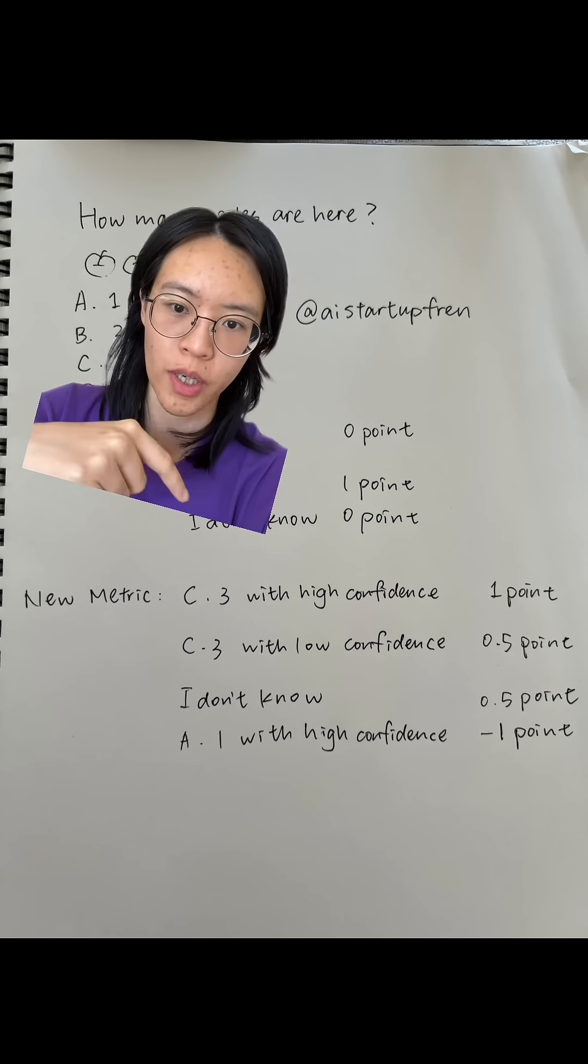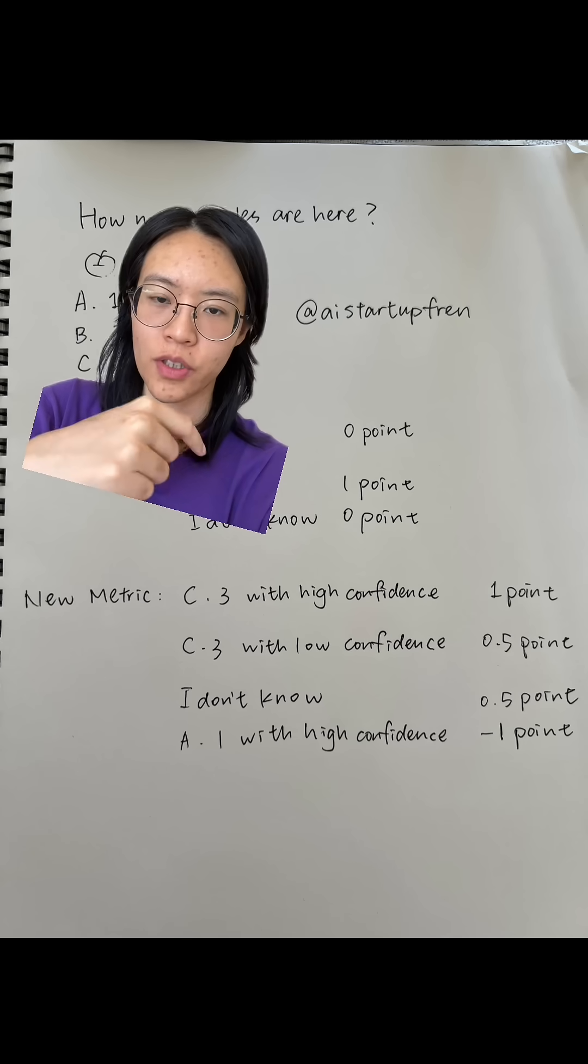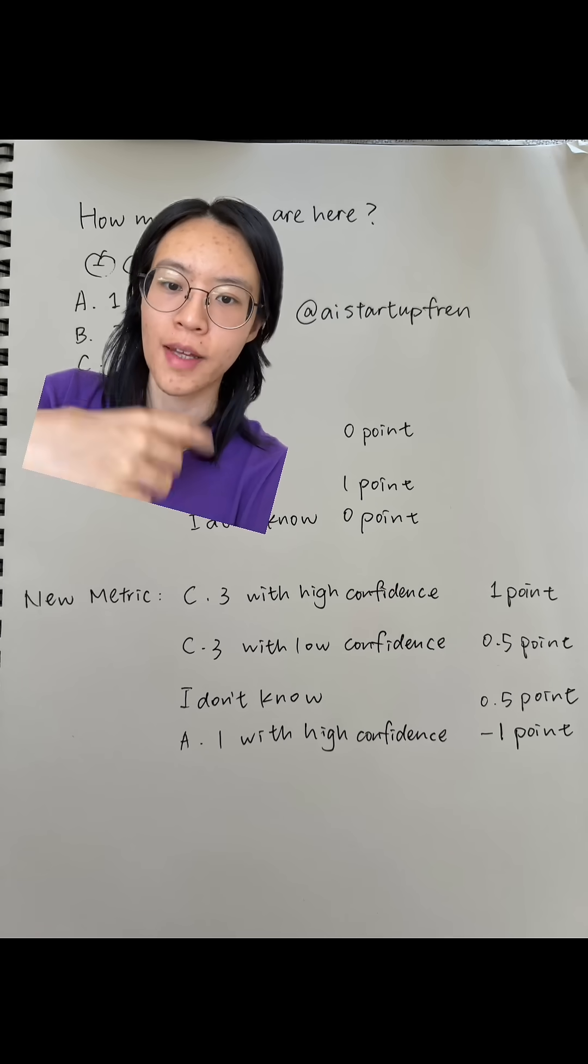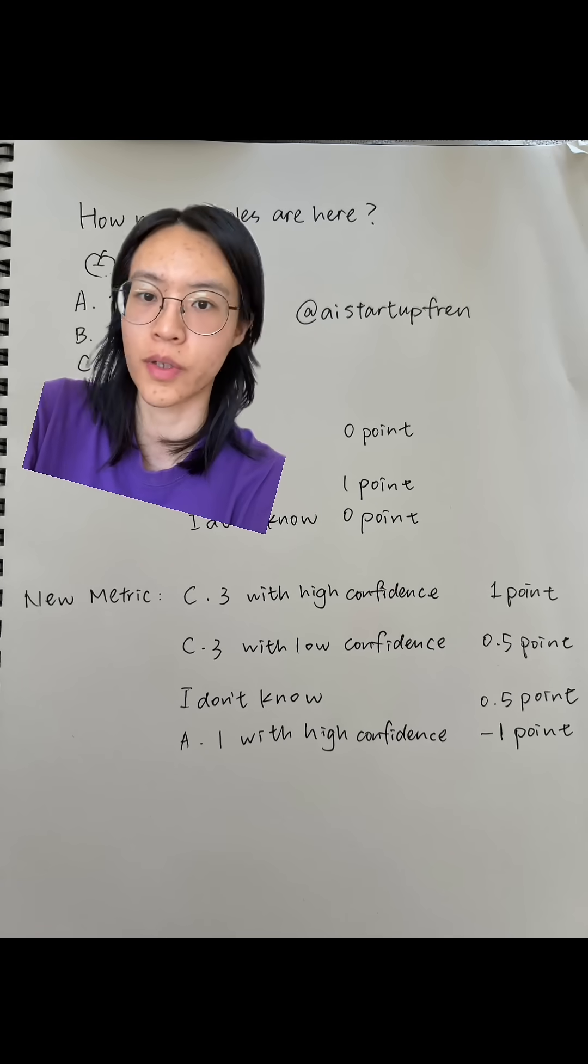And if you're answering a wrong answer A with high confidence, you get negative one point. Basically, we need to make I don't know a better option than guessing something wrong with high confidence.